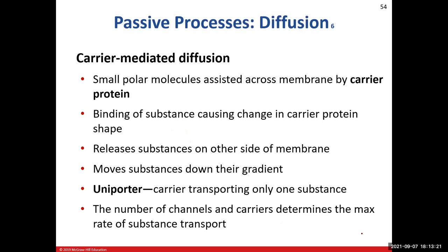The other type of facilitated diffusion is carrier-mediated diffusion. We're still dealing with small polar molecules that need help crossing the plasma membrane. A carrier protein is involved: whatever substance needs to cross binds onto the carrier protein, and when it does, it changes the shape of that carrier protein. That conformational change allows the substance to move from outside the cell to inside the cell.